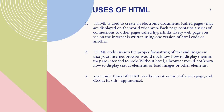Now we'll see the uses of HTML. The first and most important use of HTML is that it is used to create electronic documents called pages that are displayed on the WWW — World Wide Web. Each page contains a series of connections to other pages called hyperlinks, and every web page you see on the internet is written using one version of HTML code or another. HTML code ensures proper formatting of text and images so that your internet browser knows how to display them as they are intended to look.